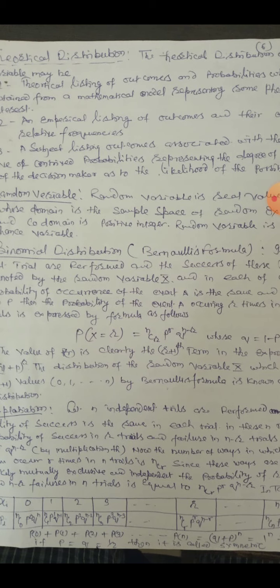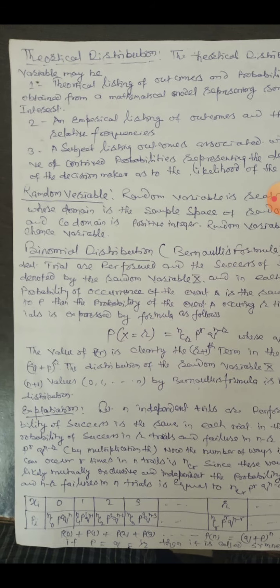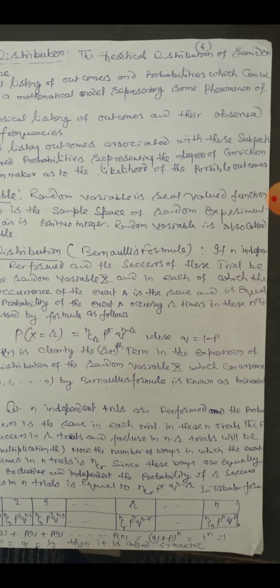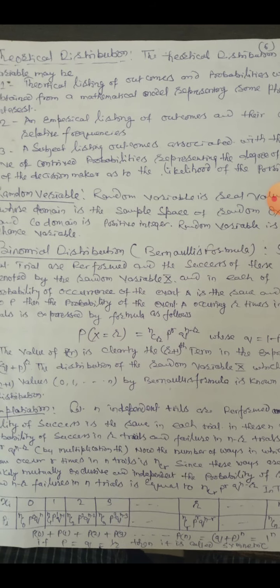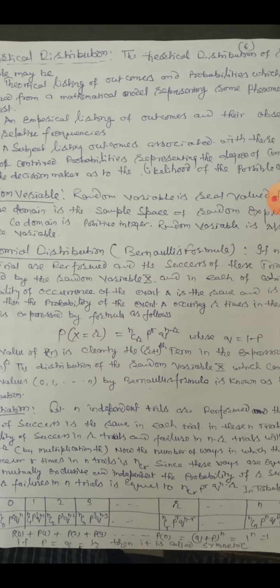So sum of these probabilities: P0 + P1 + P2 + ... + PN = (Q + P)^N. Or Q + P = 1. Putting the value of 1 at the place of Q + P, it is 1^N = 1. If P and Q are equal to 1/2, then it is called symmetric.